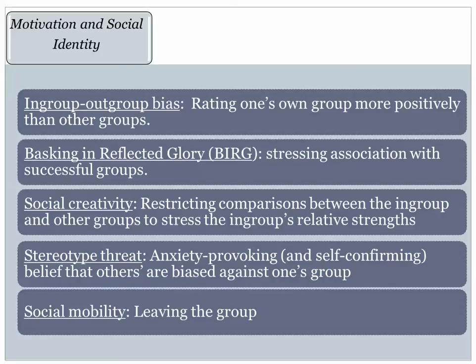A related process is basking in reflected glory — sometimes summarized as BIRGing — in which individuals stress their association with successful groups even though they're not really members of those groups. Fans of sports teams, for example, are not actually on those teams. They might admire and cheer for those teams, but they're not members. Yet when those teams succeed, fans often mention their association with the group and experience very positive psychological and emotional consequences following a team victory rather than a failure.